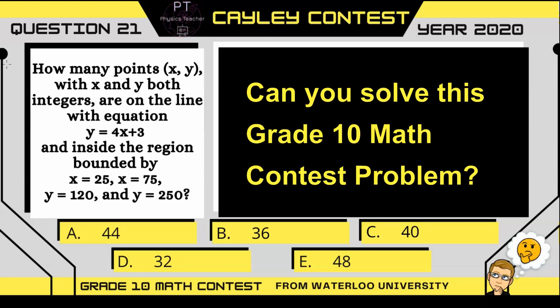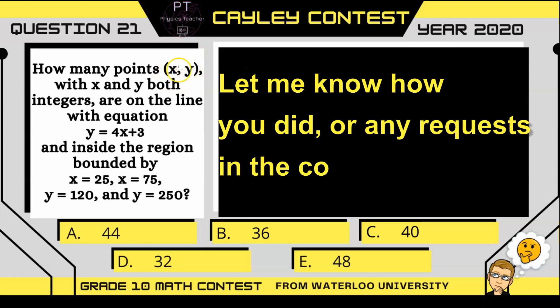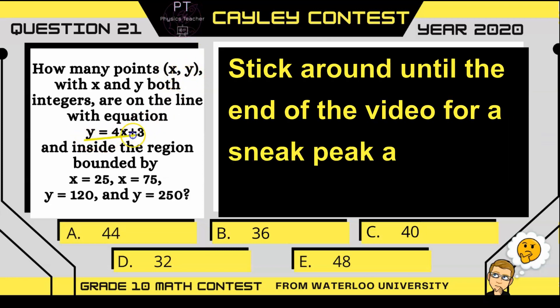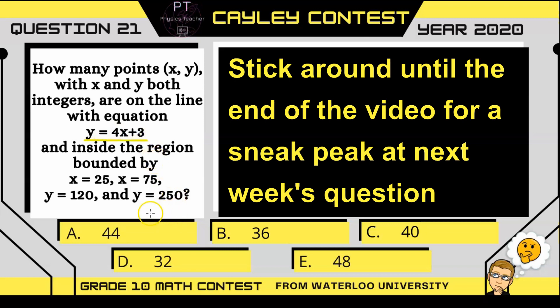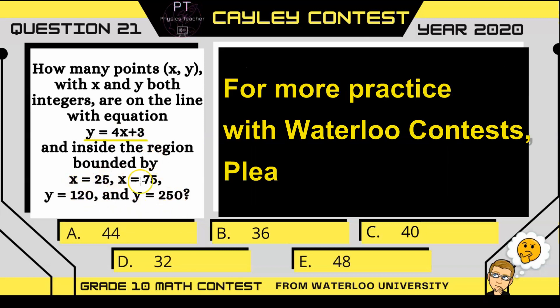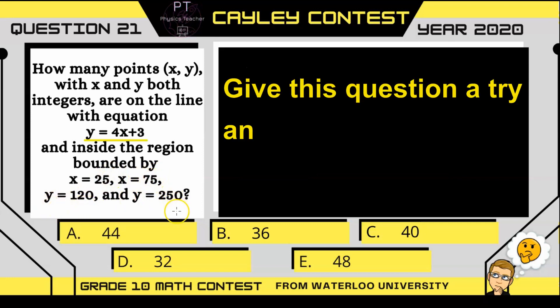This is a grade 10 math Cayley contest question, and in it we're looking for the number of points x, y that are on this equation y equals 4x plus 3, and are inside the region between x equals 25 and 75, and between y equals 120 and 250.